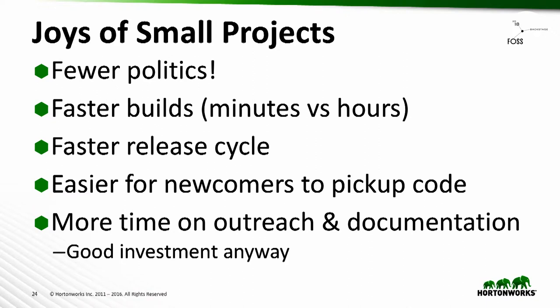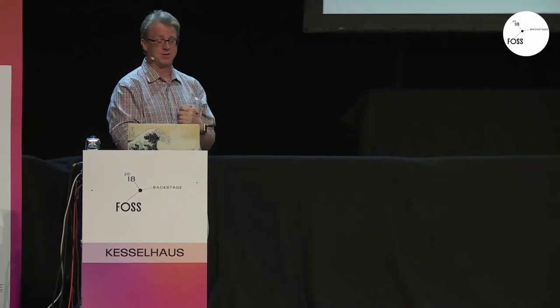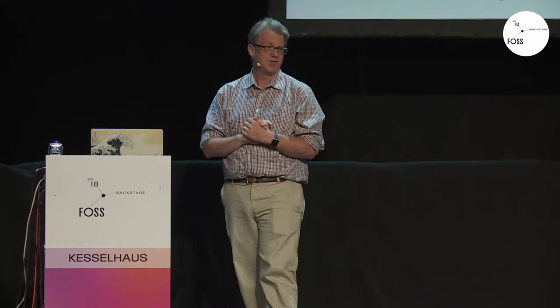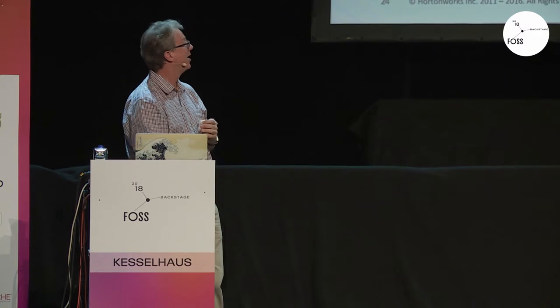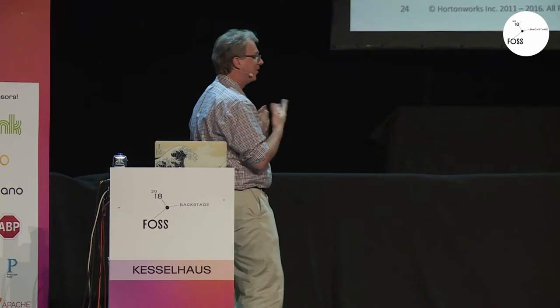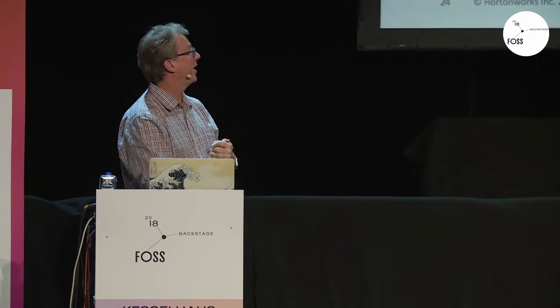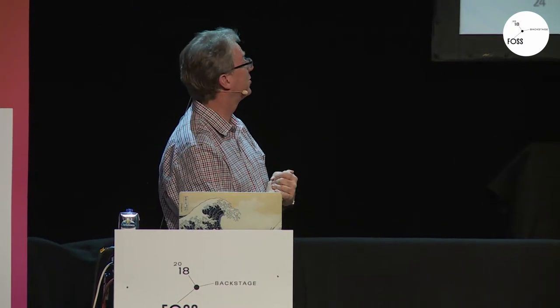Faster builds — ORC builds in a few minutes instead of hours. It takes close to 24 hours to build Hive and get all unit tests passing. Faster release cycle too: it takes months to get a Hive release out the door, but I can roll an ORC release in a matter of days — actually, one day. That means you can be much more responsive to your users. It's also much easier for newcomers to pick up the code. When we split out, people were coming in with small patches that would never have touched the code when it was buried inside Hive. Changing ORC, you've got a much smaller code base with unit tests, so you're much more confident making changes.